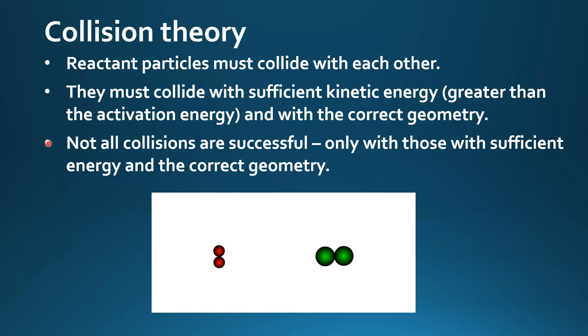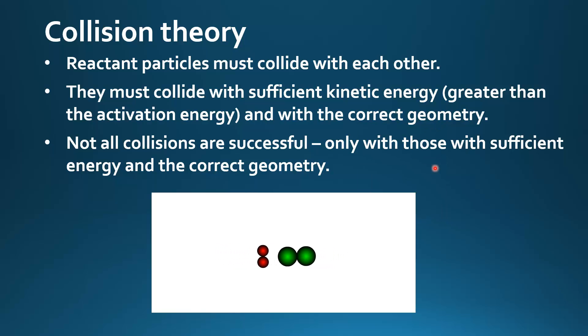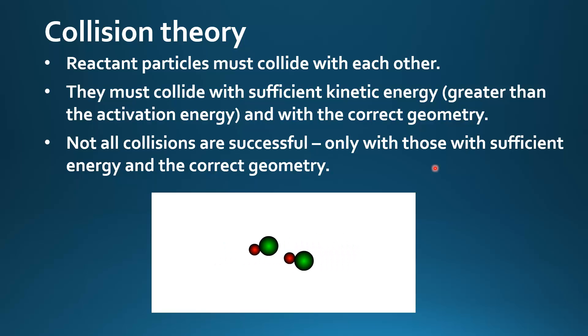Not all collisions between particles are successful — only those with sufficient energy and the correct geometry. Here we can see an unsuccessful collision where the reactant particles just bounce away from each other, and then a successful collision where the product is formed. The difference was that in the successful collision, the particles had the correct geometry and energy greater than the activation energy.